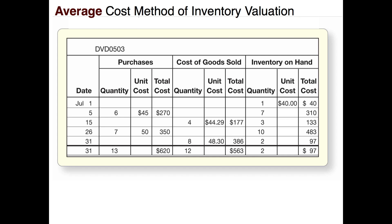Here I've got a spreadsheet set up for us. This is called the weighted average or average cost method because each time we make a purchase, we're going to need to calculate a new average cost for what we have in ending inventory. This is the same spreadsheet we've been using for FIFO and LIFO in previous videos.